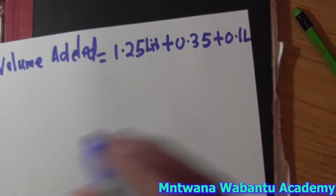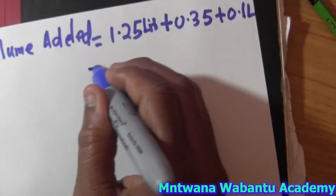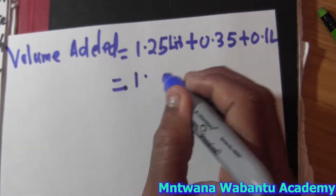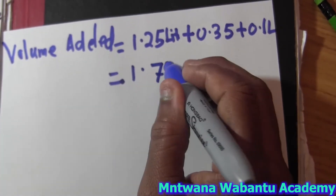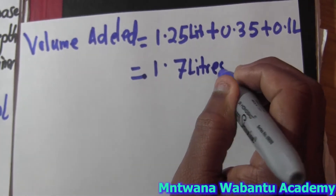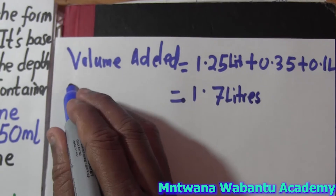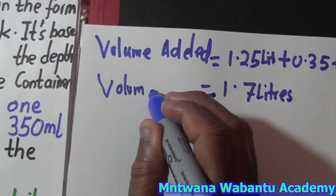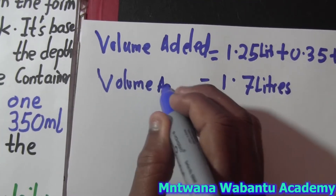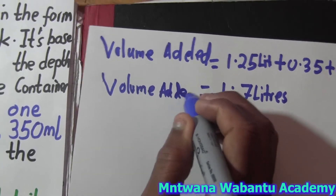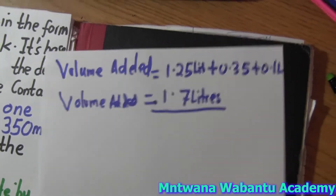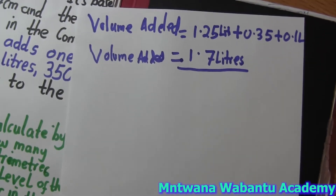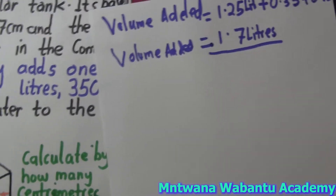So let's add all of them together: 1.25 + 0.35 + 0.1. When you add all of them together, this gives you 1.7 liters. So the total volume added is 1.7 liters.